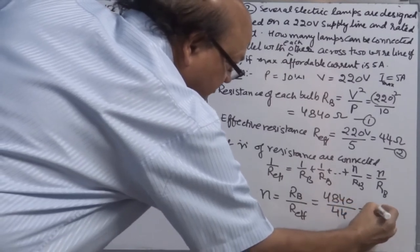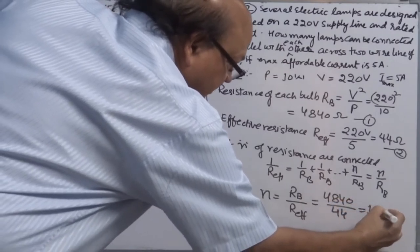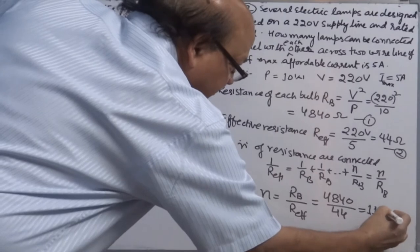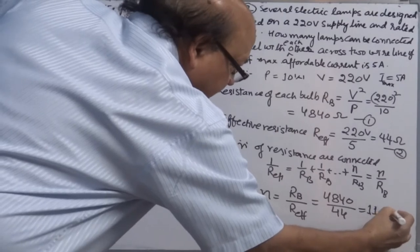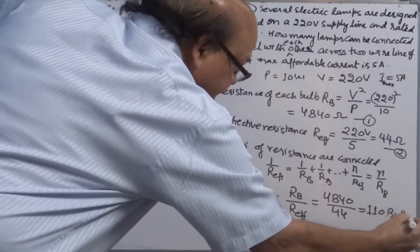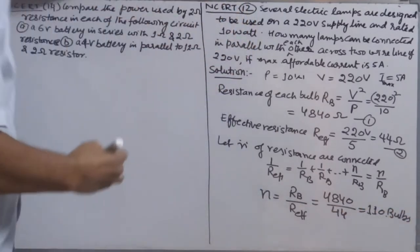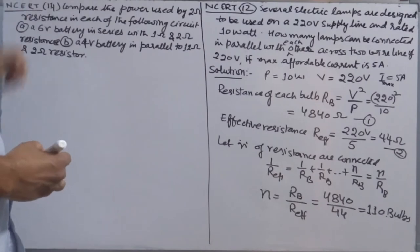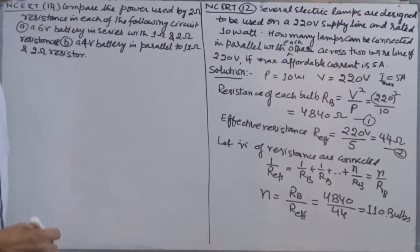Number of bulbs = R_b / R_effective = 4840 / 44 = 110 bulbs. That's how you calculate the number of bulbs.